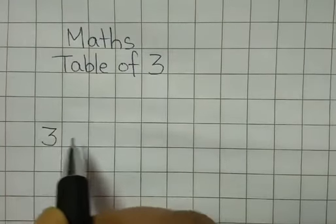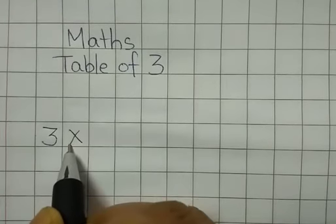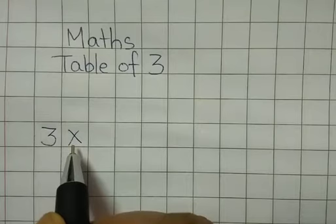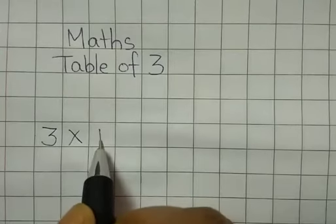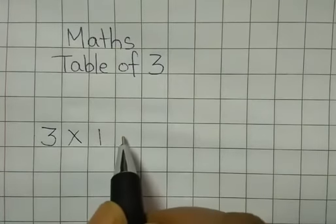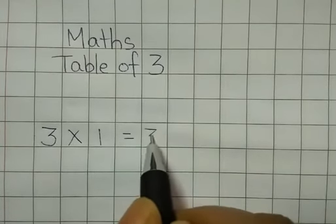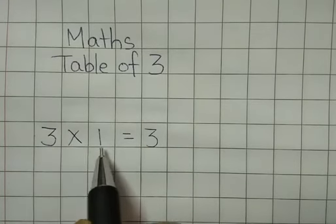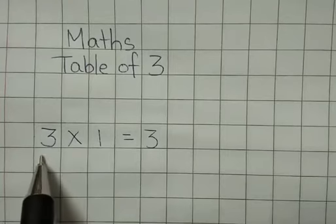Three, multiplication sign. This is the multiplication sign, children. You have not learned it yet, so this is called the multiplication sign. Three times one is equal to three. And how will you read it? Three ones are three.